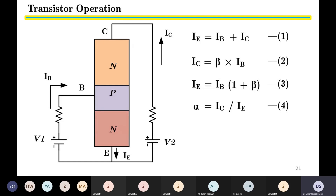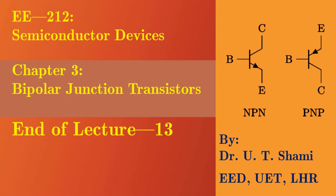The emitter current in terms of base current is IE = IB × (1 + β), derived by rearranging the first equation. The relationship between collector current and emitter current is defined by alpha: α = IC / IE. Alpha is normally very close to one. These are the important parameters of the transistor.